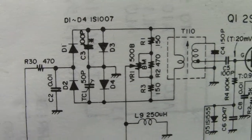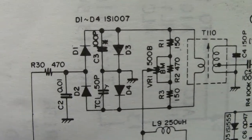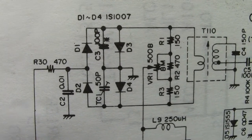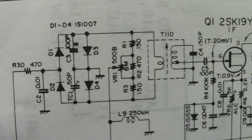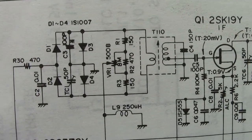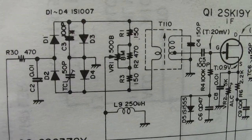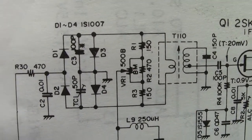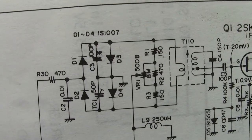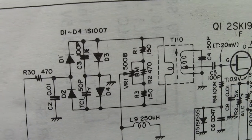If you cannot get rid of that carrier on your transmitted signal through the use of VC1 and VR1, the carrier balance controls or adjustments, you have a problem. It is basically one of these diodes. Replace them all with brand new 4148s.